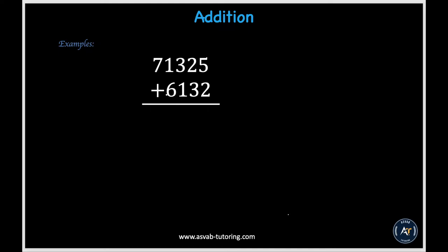Let's start off with Addition. In this example, we are being told to add up 71,325 to 6,132. In order to figure this out, we must start with the ones place and add up all the columns starting from there. So in the ones place, we have 5 plus 2, which is equal to 7.